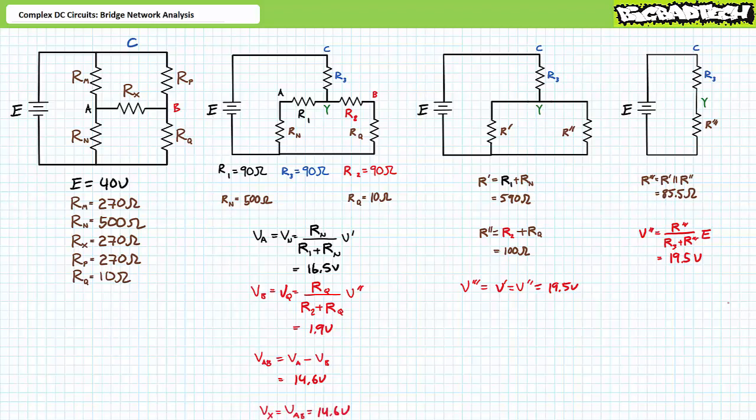With the understanding that the bridge network is none the wiser to the substitution of the balanced Y for the balanced delta, we assume the balanced delta also experiences a 14.6-volt differential from node A to node B. Delta resistor RX experiences a voltage drop of 14.6 volts, and an application of Ohm's law demonstrates it experiences 53.9 milliamps of current traveling left to right.